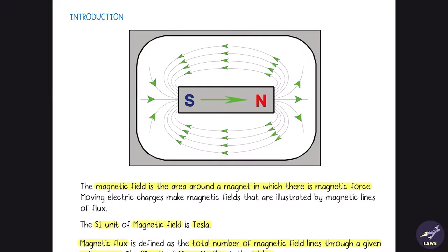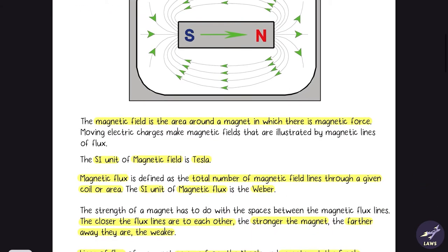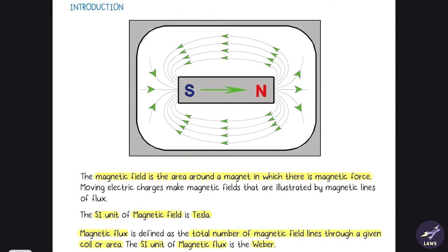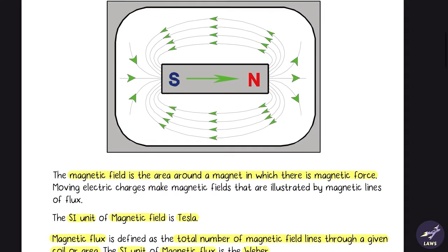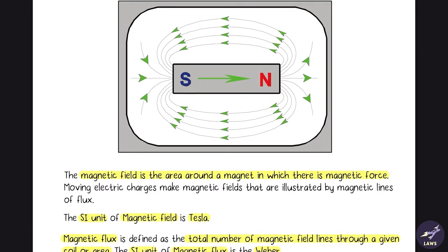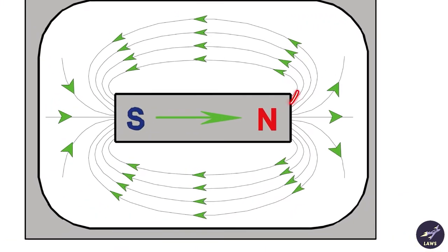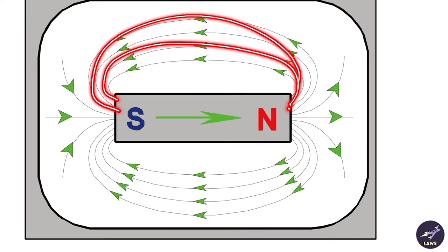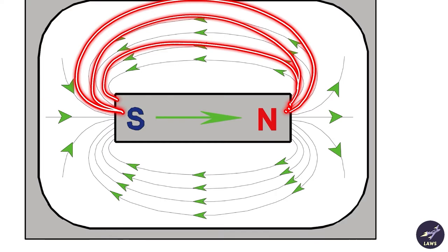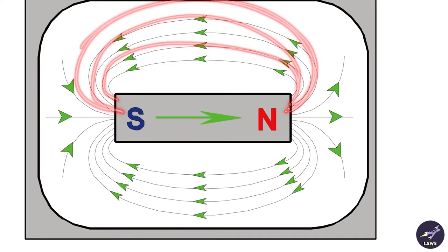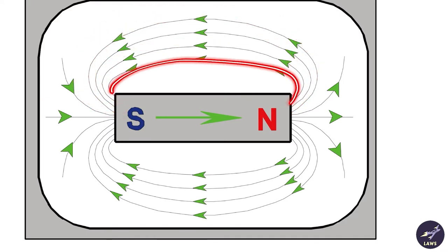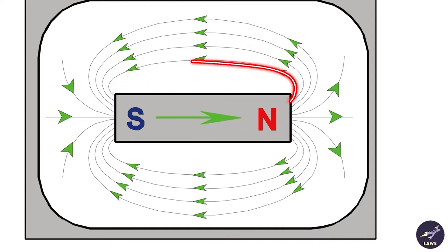So in this chapter we'll look at magnetism. The magnetic field is the area around a magnet in which there is a magnetic force. As you can see, these are magnetic lines of forces — they start from the north pole and go towards the south pole. These magnetic lines never intersect; they can be very close to each other but they won't cross.